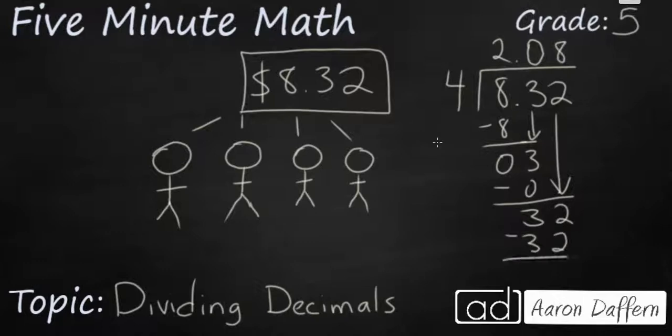Now, remember, this started out as a money problem. We had $8.32. So, rather than writing 2 and 8 hundredths, bring your dollar sign back in. $2.08.